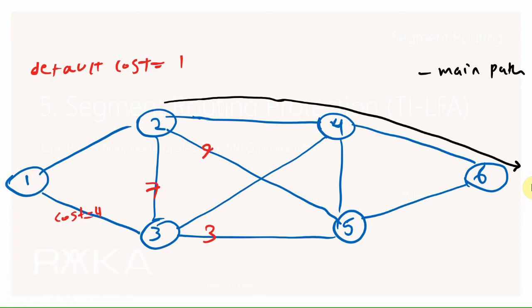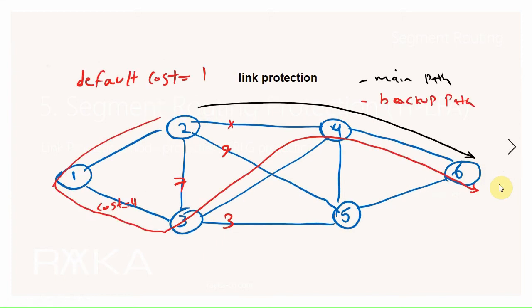To understand the different types of protection, I have already prepared a topology. In this topology, the cost of all links is 1 except for links where I have written the cost value. For example, the cost between router R1 and R3 is 4. We will discuss different types of protection from router R2's perspective and for a specific destination, router R6. However, this applies to all nodes and destinations in the network.